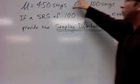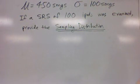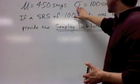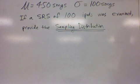The overall average number of songs on all possible iPods is 450 songs, and the standard deviation would be 100 songs. That's looking at individual iPods.